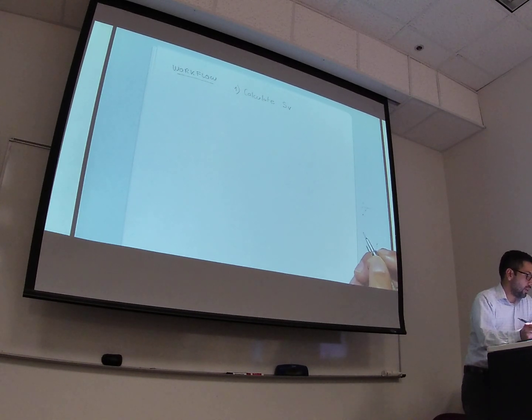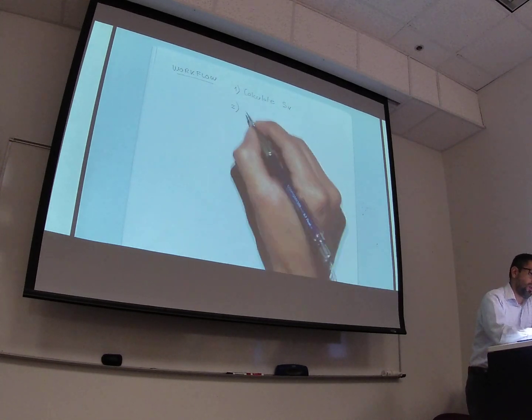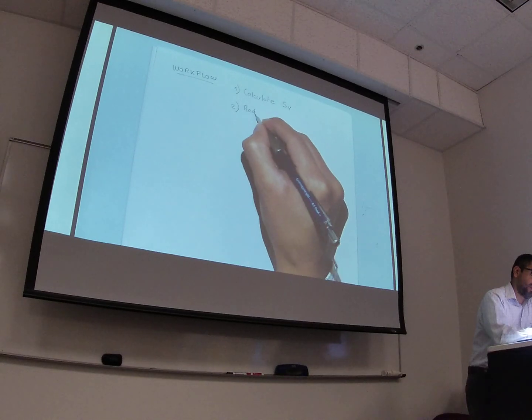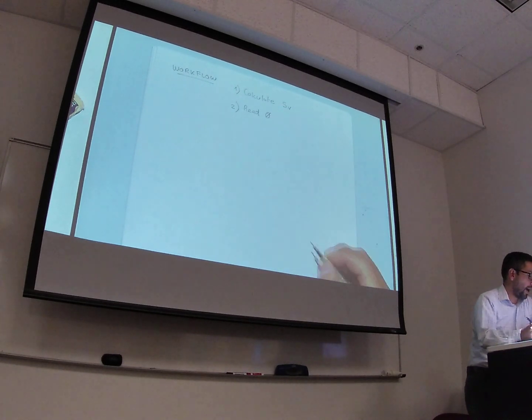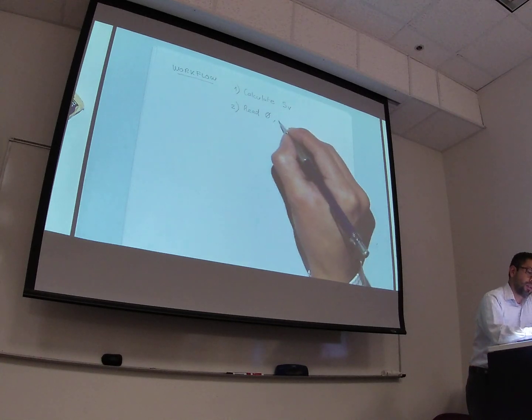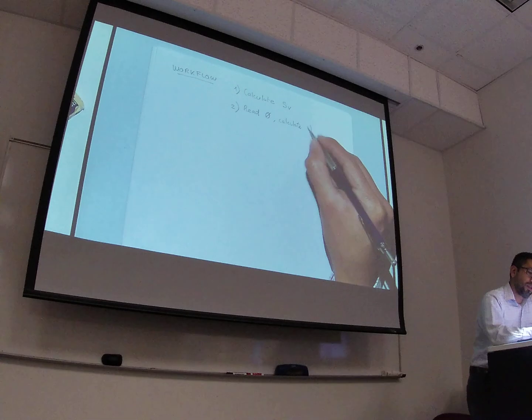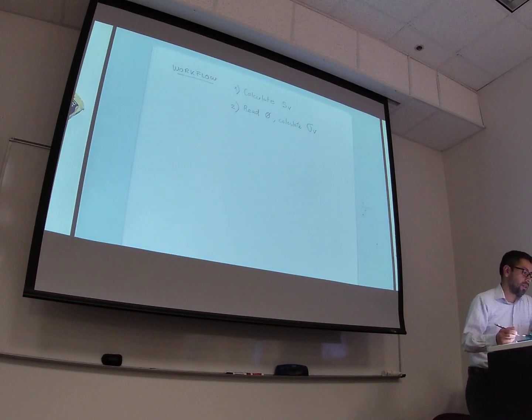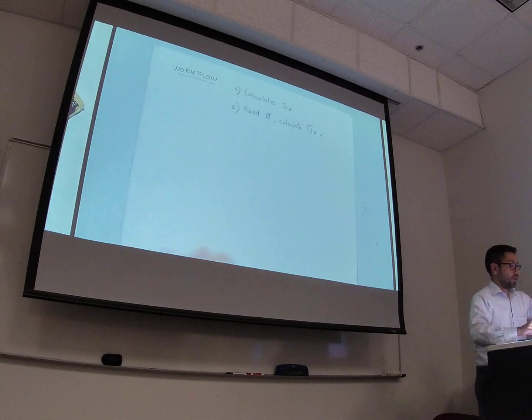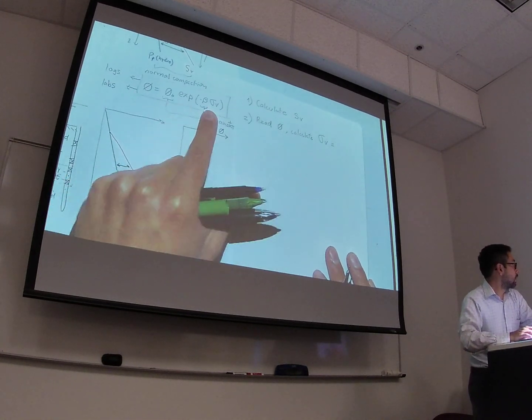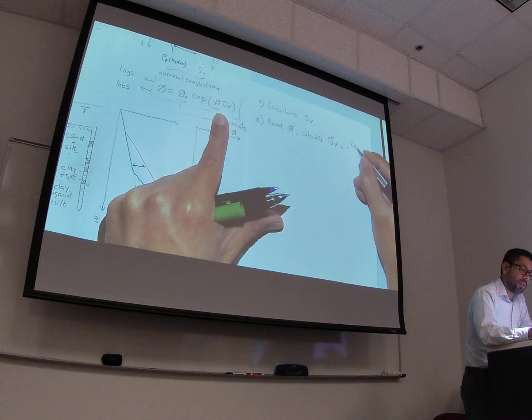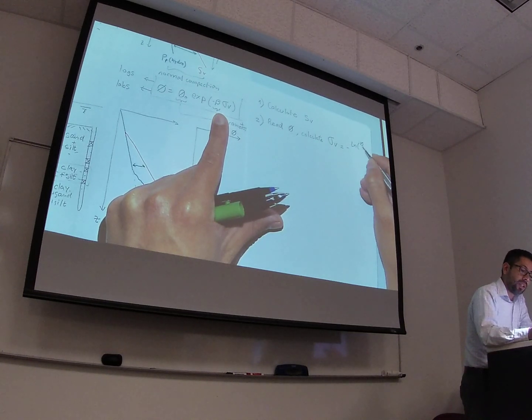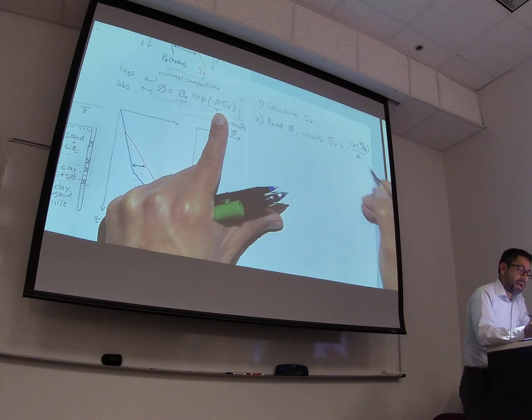Alright, the second thing that you're going to do is to read porosity. And based on porosity, you calculate the value of effective vertical stress, which if you work out this equation over here, I'm just rewriting the equation, is going to be negative the natural logarithm of the porosity at the given depth divided by the initial porosity divided by the parameter beta.